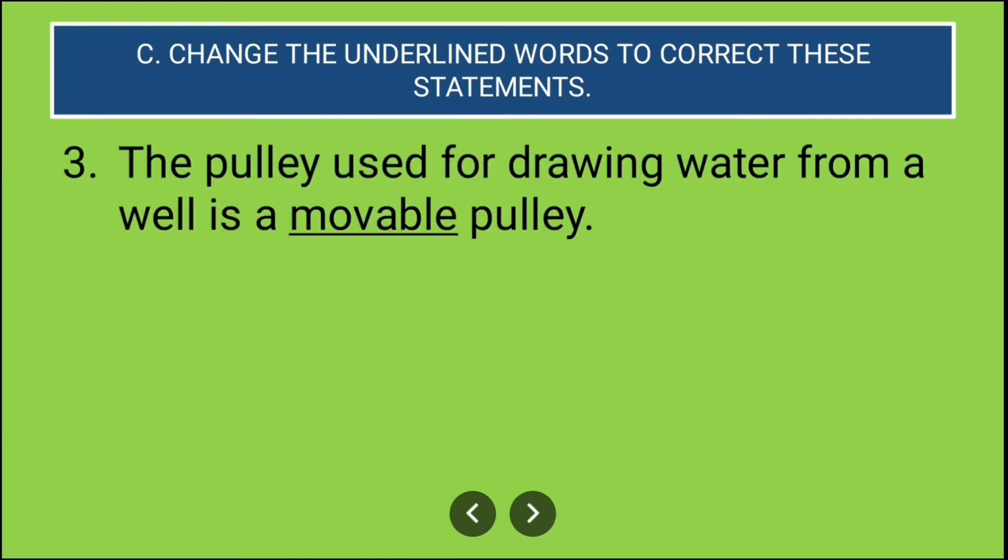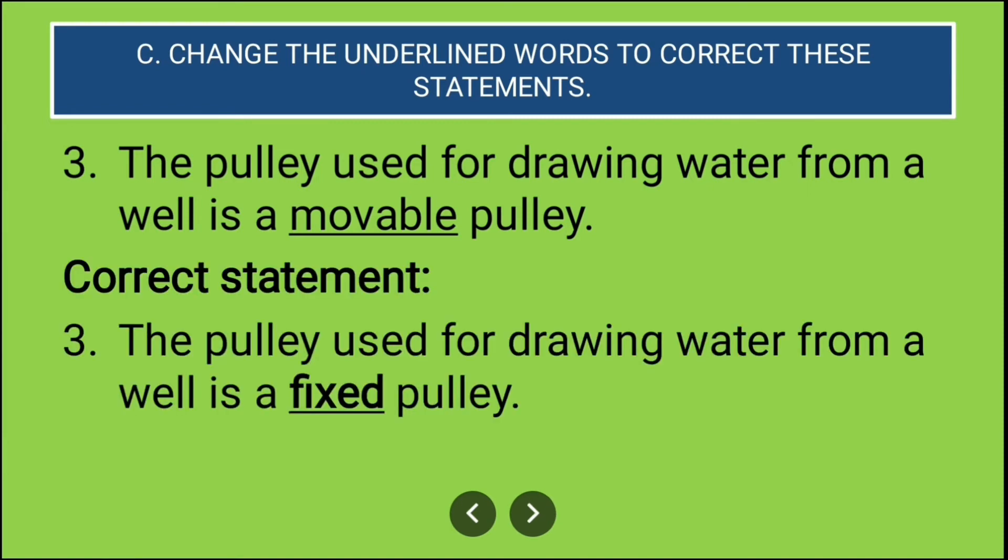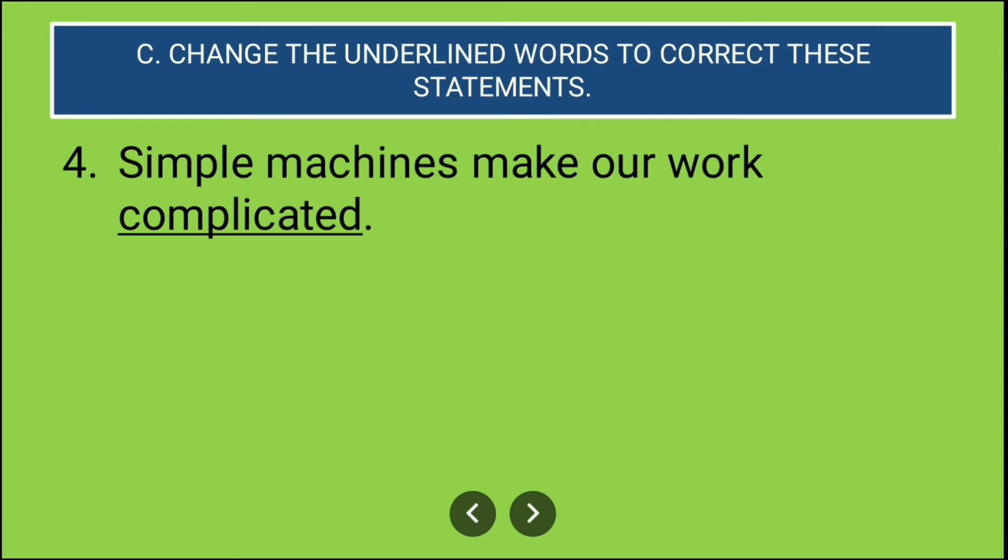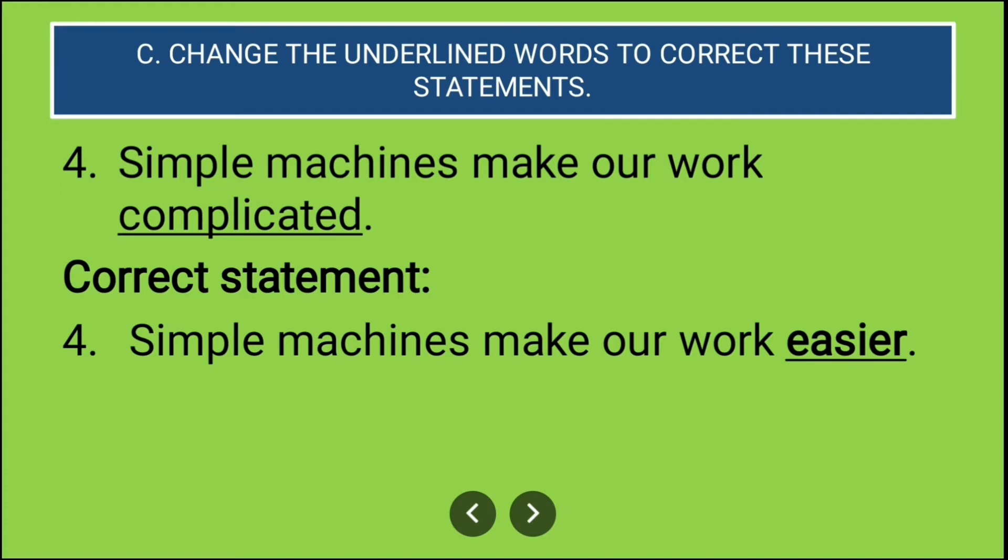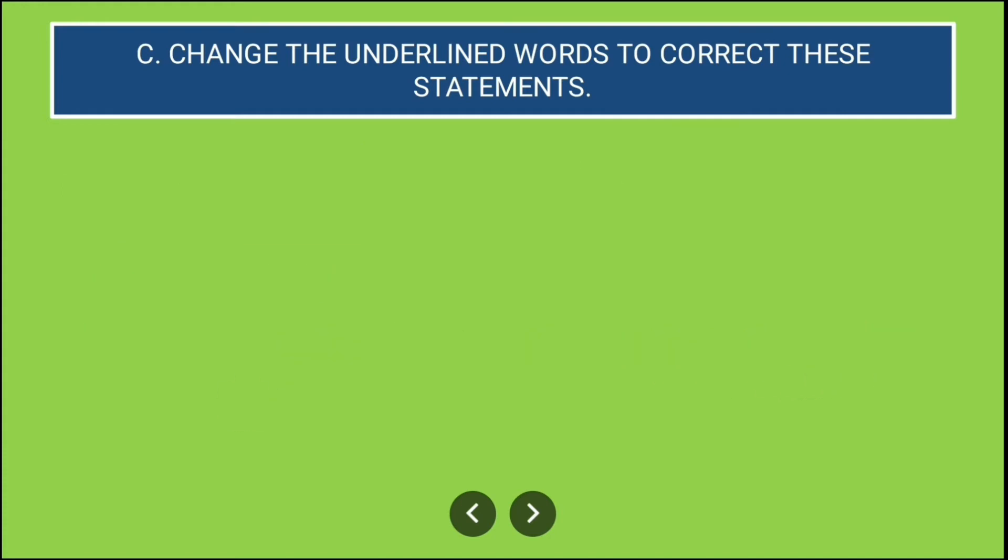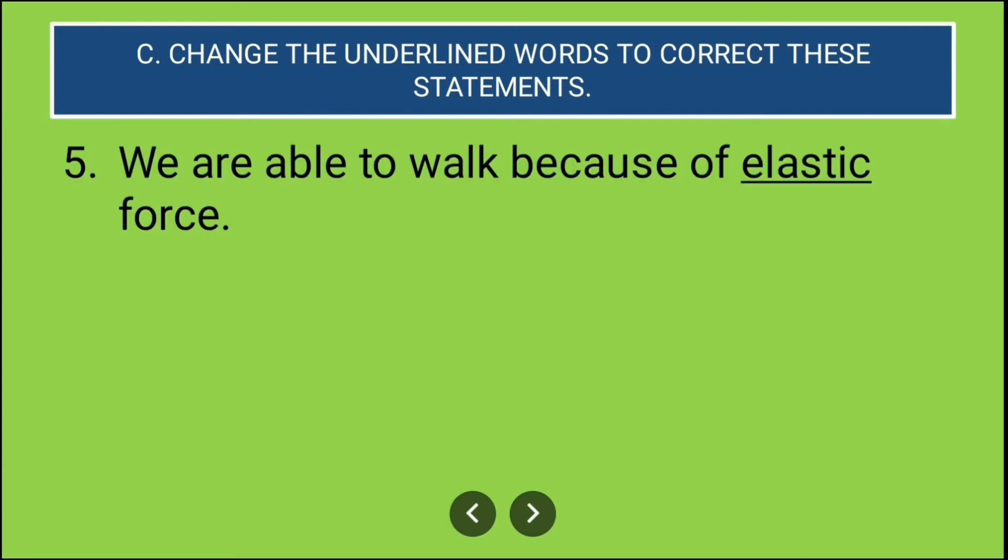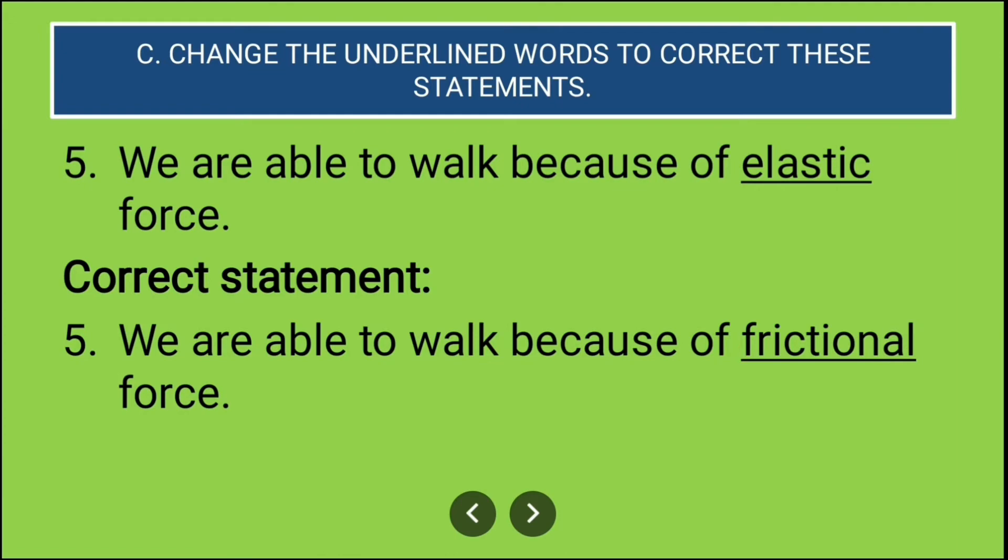Third question: the pulley used for drawing water from the well is a movable pulley. Is it right? No, it is a fixed pulley. Fourth question: simple machines make our work complicated. Definitely not, simple machines make our work easier. What is the next question? We are able to walk because of elastic force. The answer is: we are able to walk because of frictional force.